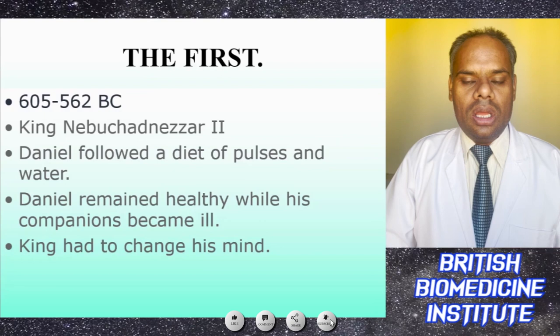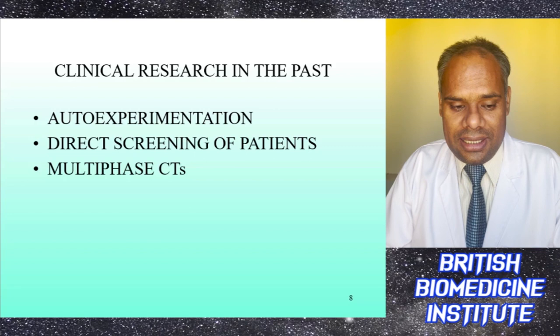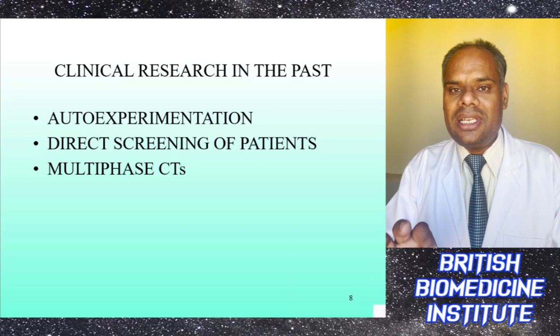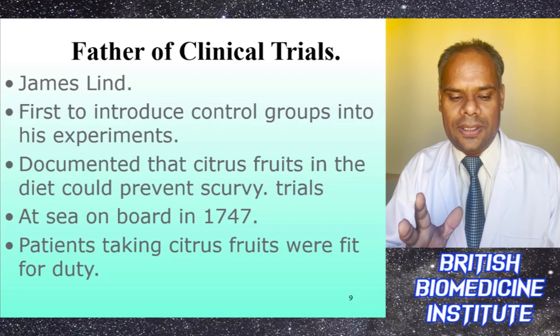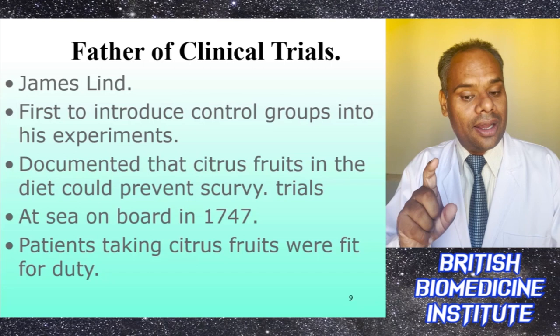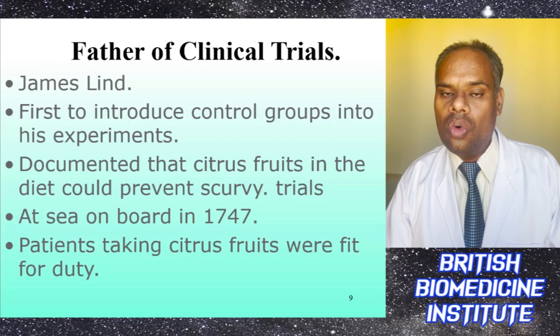Clinical research in the past involved auto-experimentation, direct screening of patients, and multi-phase clinical trials. James Lind is regarded as the father of clinical research or clinical trials. He was the first person to introduce a control group into his experiment, documenting that citrus food in the diet can prevent scurvy. He recruited 12 patients in 1747 and concluded that patients taking citrus fluid were fit for duty.